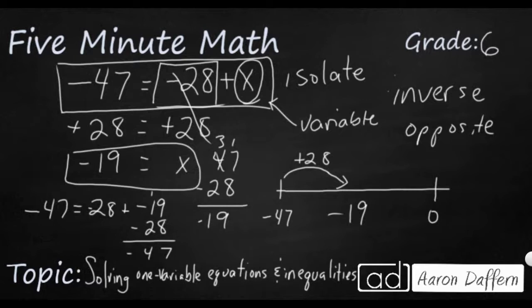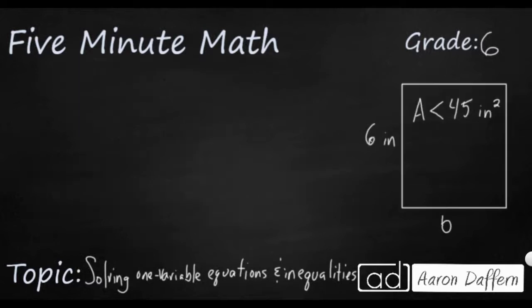Now let's look at an example using geometry. Another type of problem you might need to solve is a basic geometry inequality. In this case, the area of the square is less than 45 inches — not equal to, but less than — which makes it an inequality.